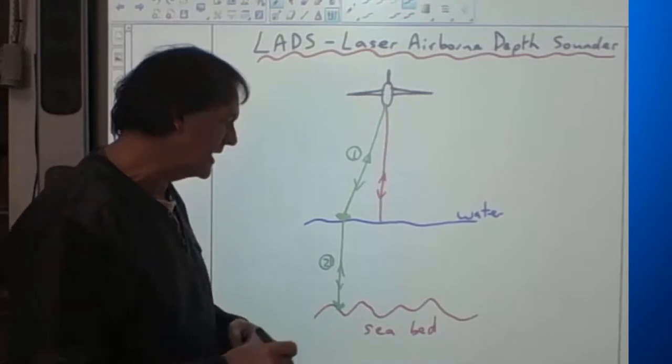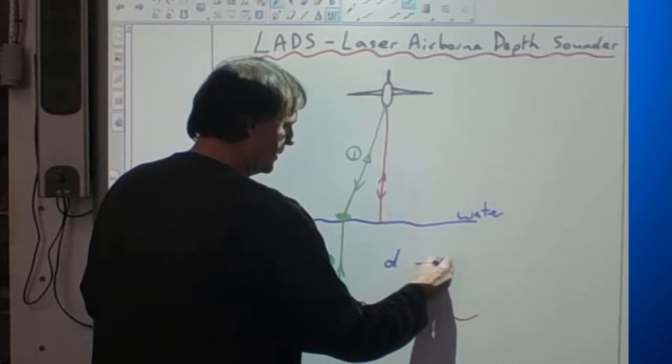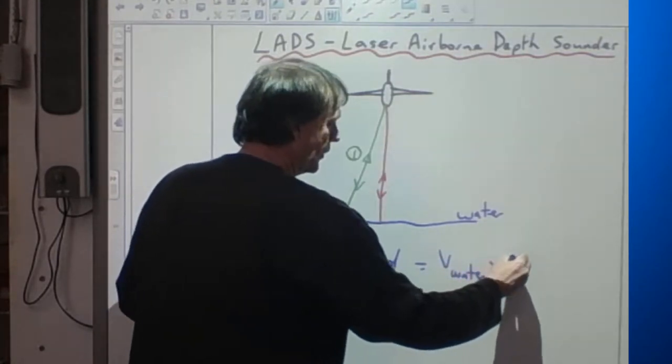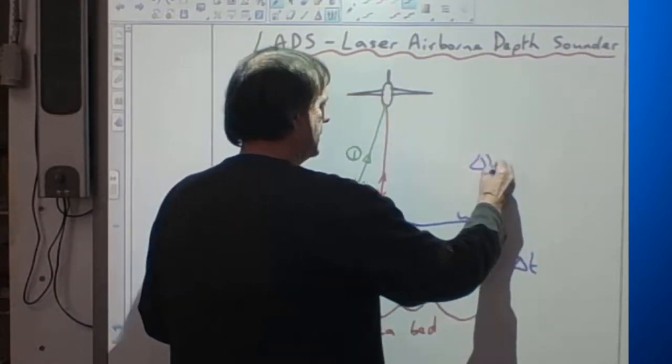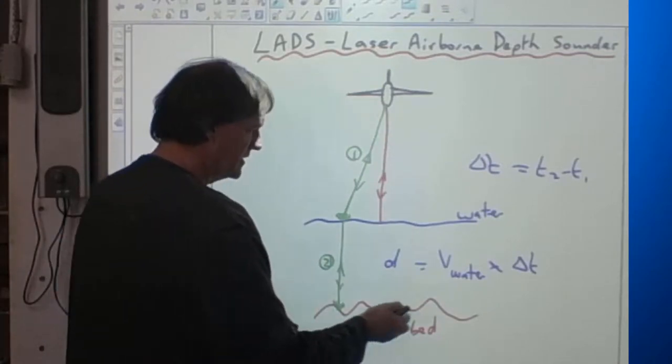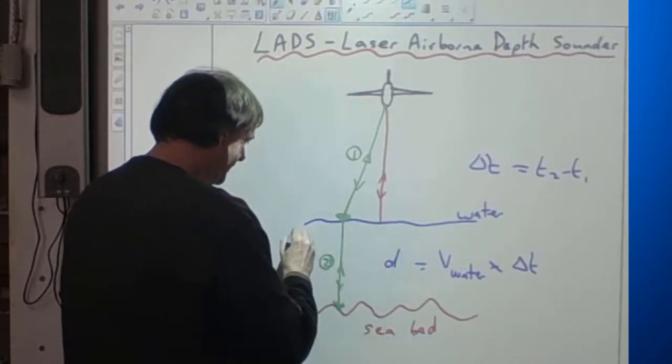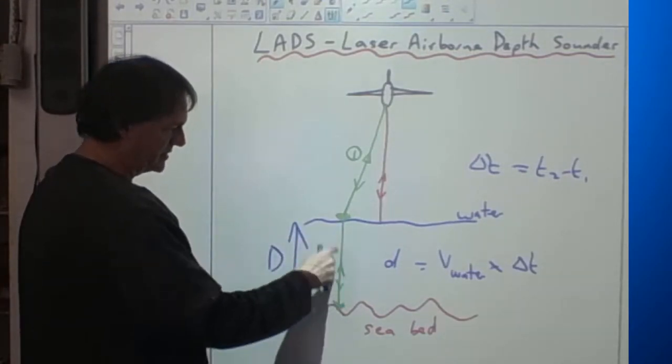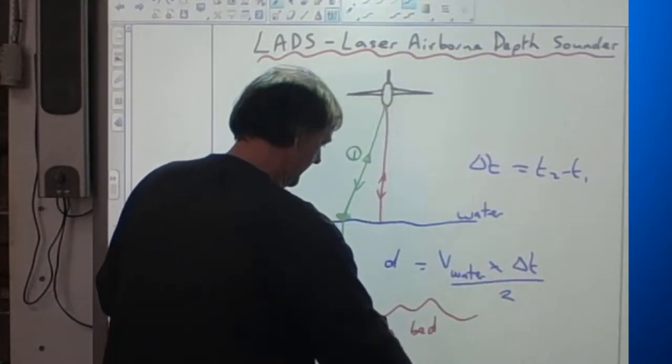So the extra distance travelled by the beam going down and back again under water would be the velocity of the light in water times by the time delay between the two beams, and that time delay would be T2 take T1. That's the time it is under water. That's the distance travelled down and back. Now to get the depth then, we need to halve that because it's going down and back again. So halving that will give us the total depth.